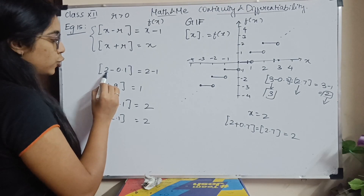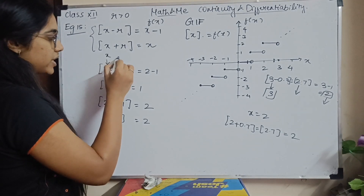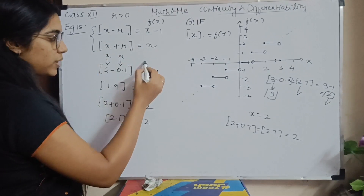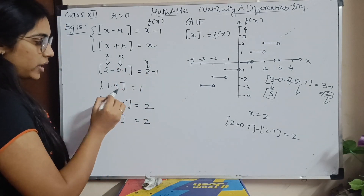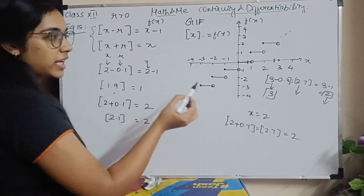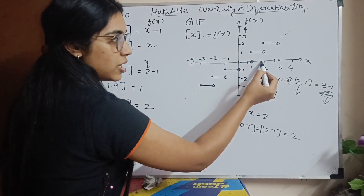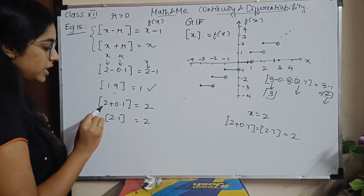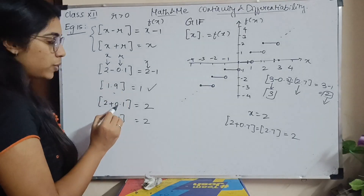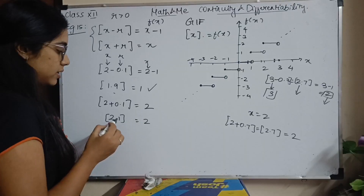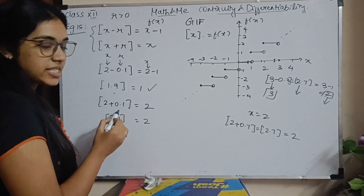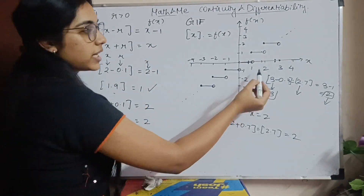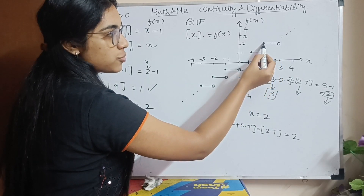Here are examples. When x is 2 and r is 0.1, with a minus: 2 minus 0.1 is 1.9, so f(x) = x minus 1 = 2 minus 1 = 1. The greatest integer function of 1.9 equals 1 — you can verify on the graph. Similarly, when x is 2 and r is 0.1 with a plus: 2 plus 0.1 is 2.1, so the greatest integer function equals x itself, which is 2. The value of 2.1 on the graph is 2.